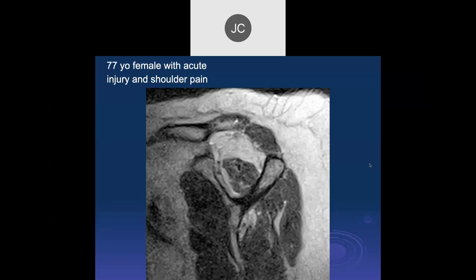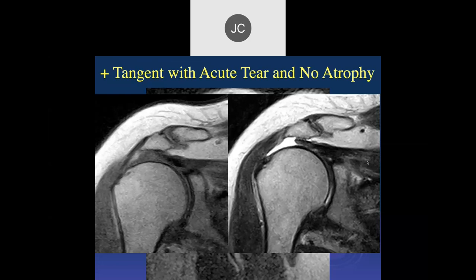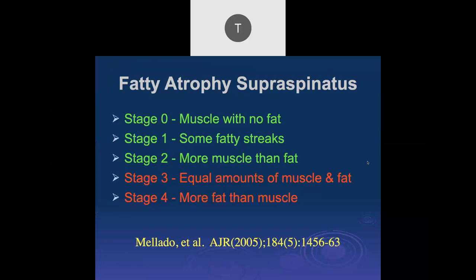A 66-year-old male with pain after acute trauma shows a positive tangent sign on sagittal view, and coronal images confirm a complete supraspinatus tear with retraction. However, the muscle itself looks very good with no real atrophy — a perfectly normal muscle despite the positive tangent sign. Similarly, a 77-year-old female with acute injury shows a full-thickness supraspinatus tear with retraction and positive tangent sign, but again without significant fatty atrophy.